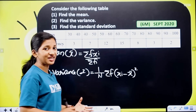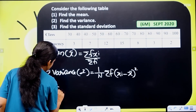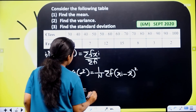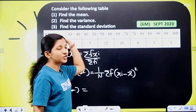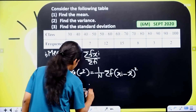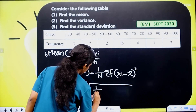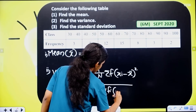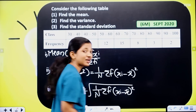Next one: standard deviation. Third one: standard deviation — we have to denote the mean. Standard deviation equal to square root of 1 by n, sigma fi, (xi minus x̄) the whole square.